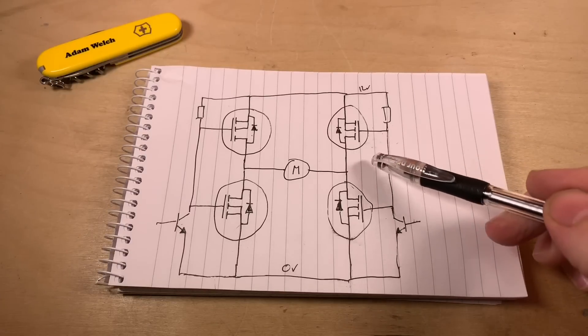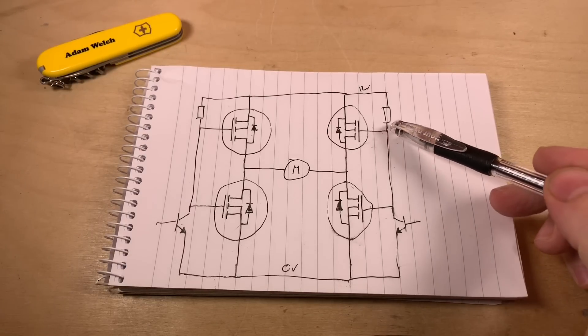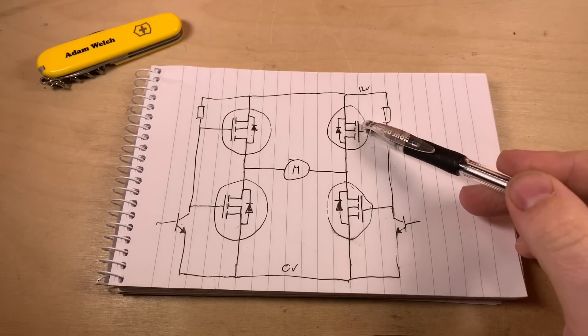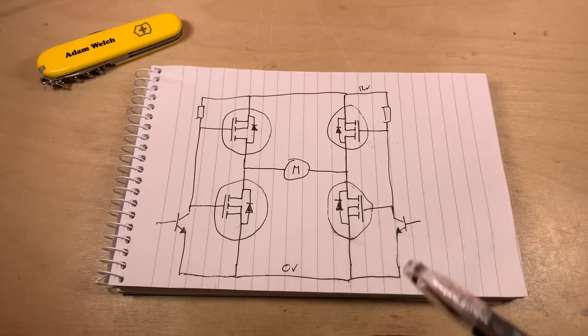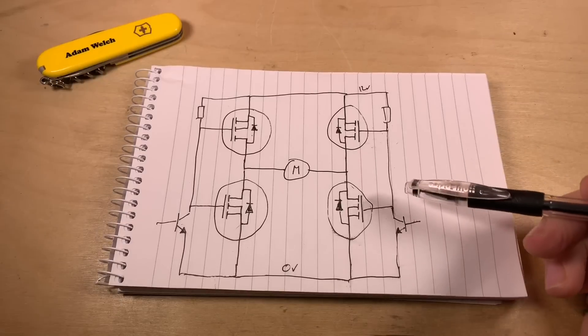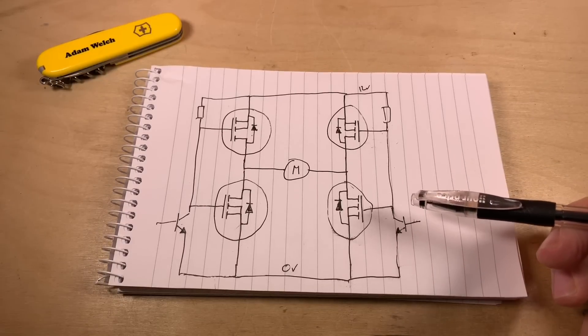And that major mistake is in this area here where I tied the gates of the P-channel MOSFET up here and the N-channel MOSFET down here together. My hope was that this meant I would need less pins on the Arduino to control the two sides of this H-bridge.